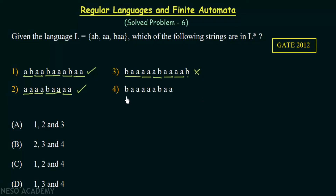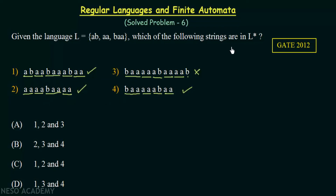Now let's come to option number 4. We can start with BAA, which is in the language. Then we have AA, which is also there. Then we have AB, which is also in the language. Then we have AA, which is also there. So option 4 is also accepted. So from options 1, 2, 3, and 4, we find that 1, 2, and 4 are in L* or the closure of L, and 3 is the only one that cannot be formed.